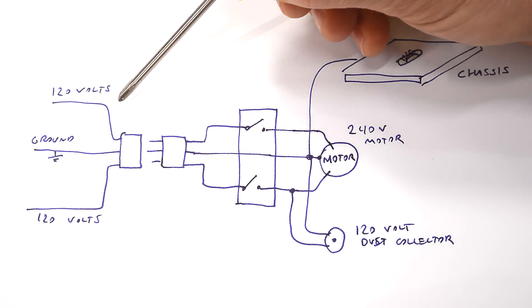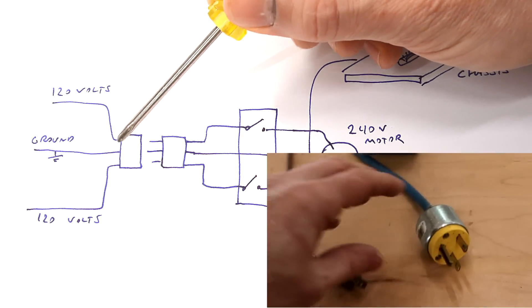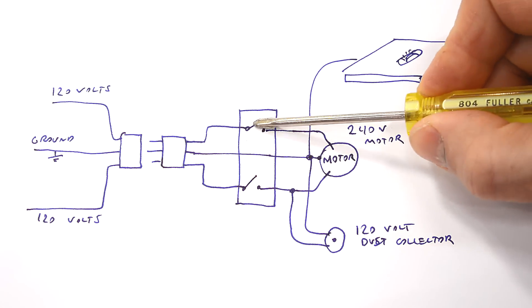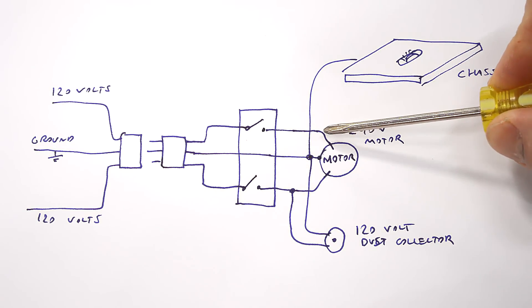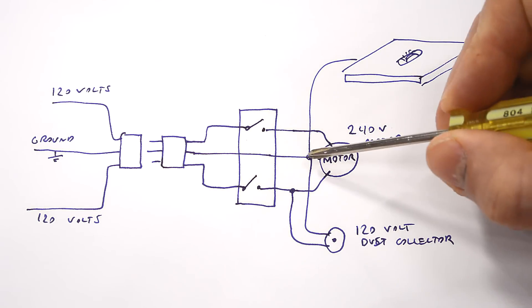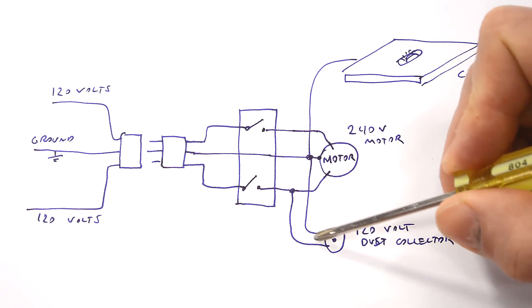Now my table saw is running off of a three wire circuit with the two phases plus ground going through the wire and the plugs, and both phases are switched going into the motor. I used to have my small dust collector connected between ground and one of the phases to get 120 volts.